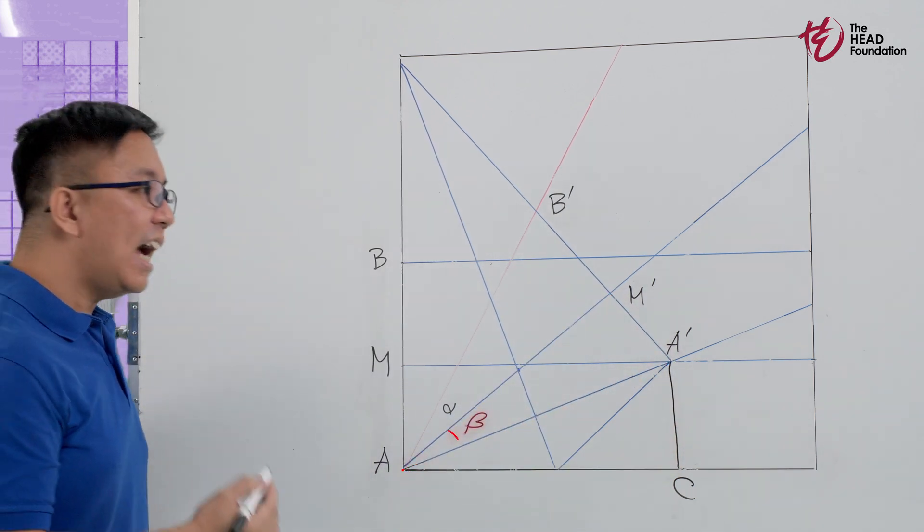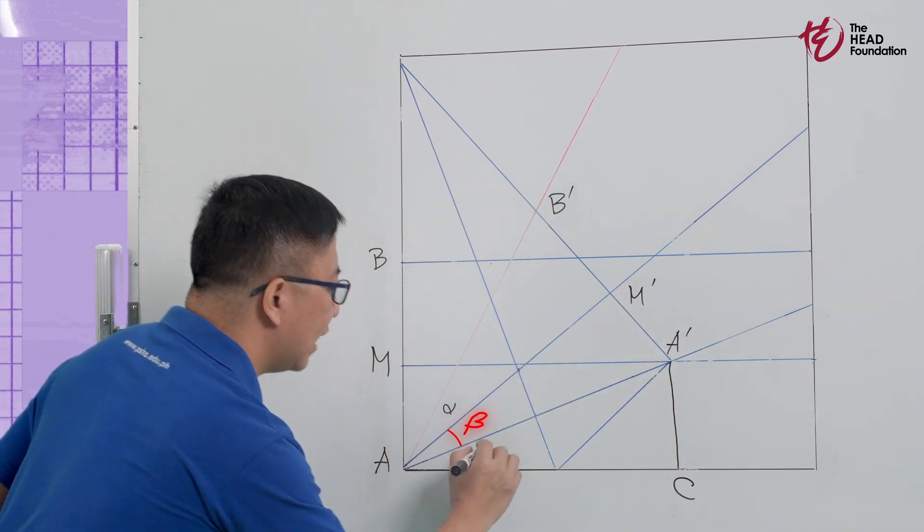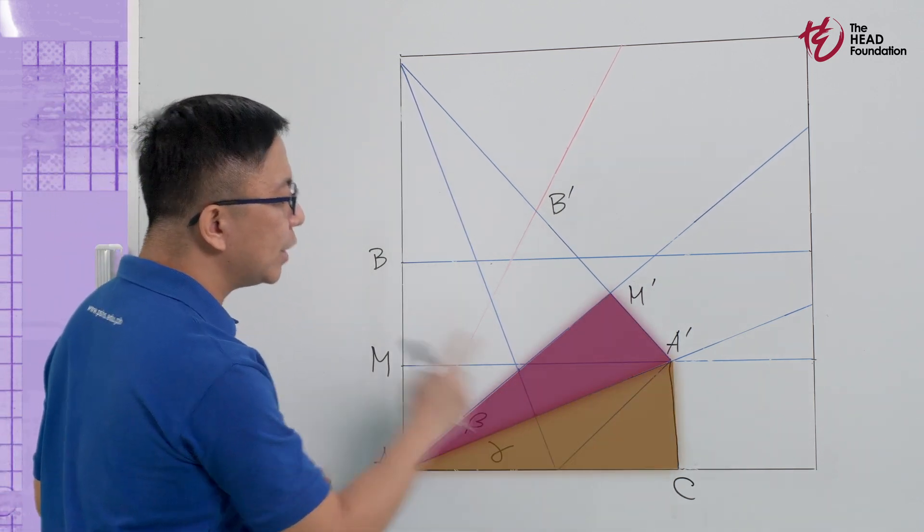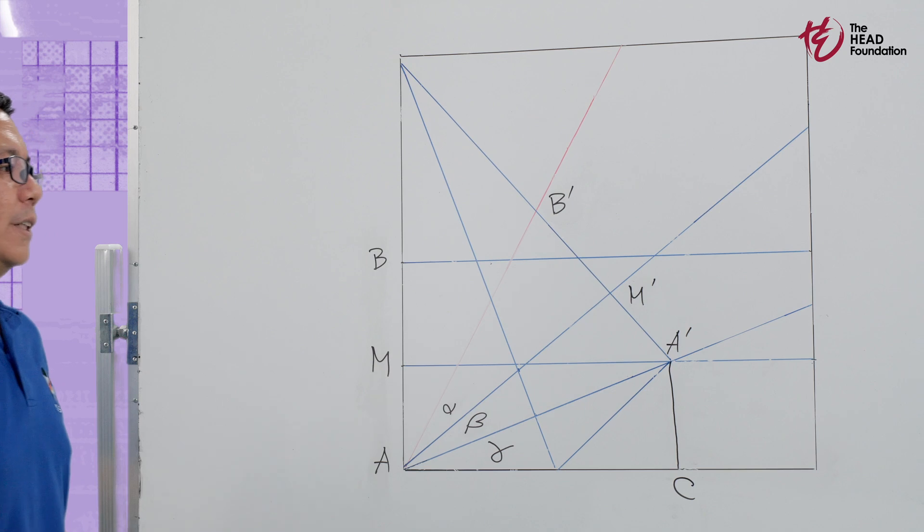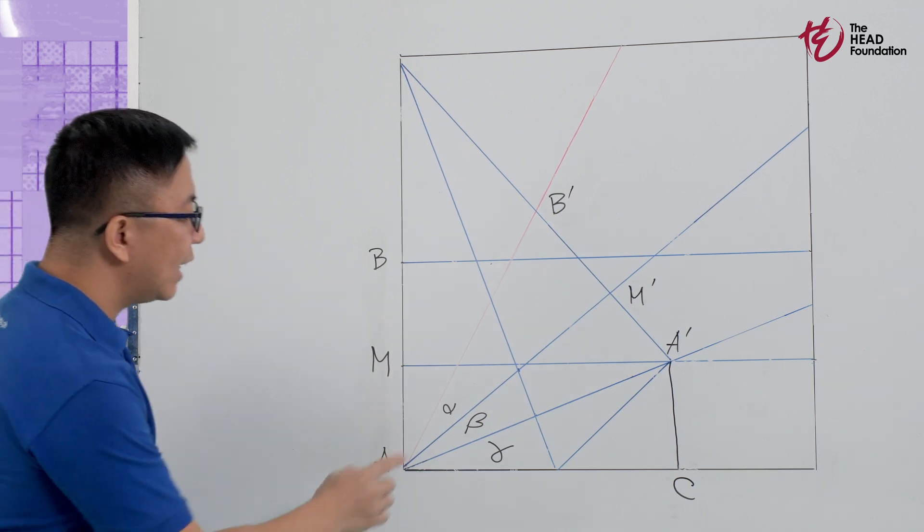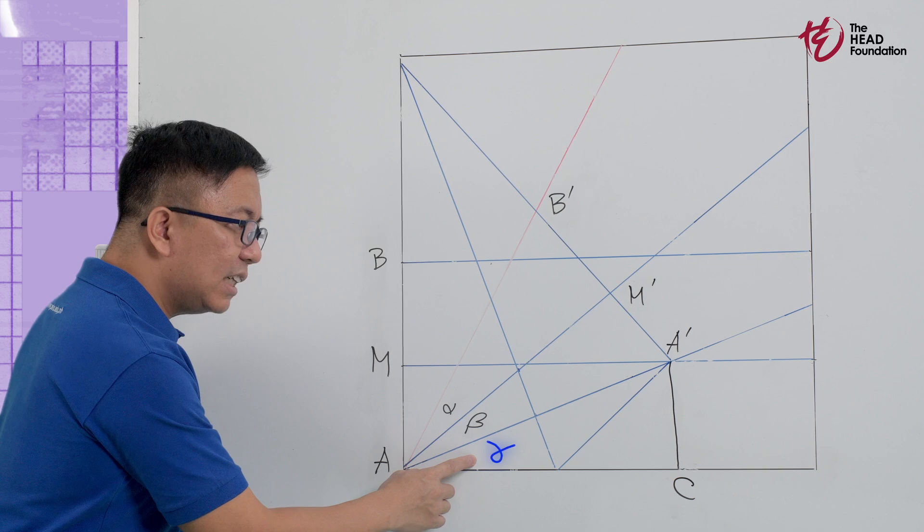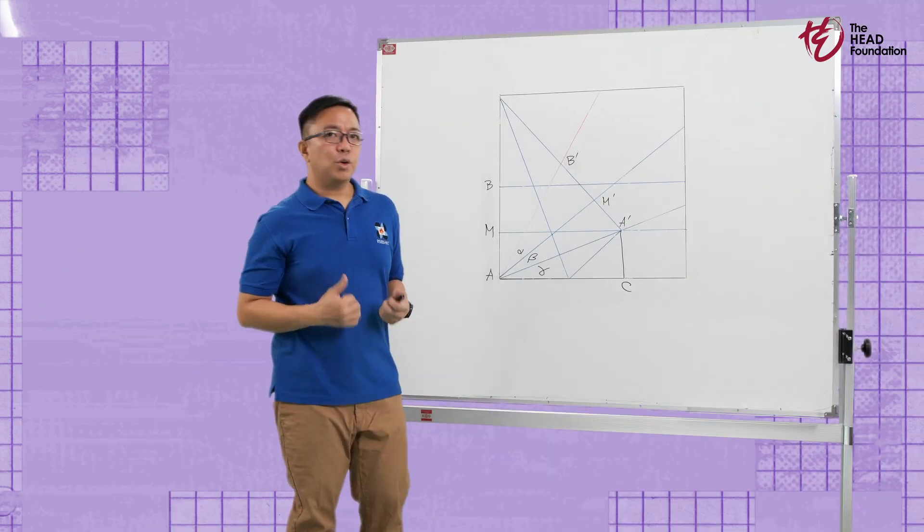Finally, angle beta is equal to angle gamma, since corresponding parts of congruent triangles are congruent. So, angle alpha is equal to angle beta is equal to angle gamma, trisecting our original angle.